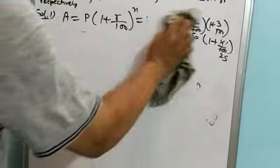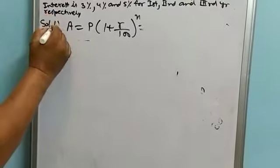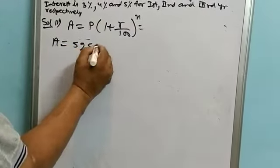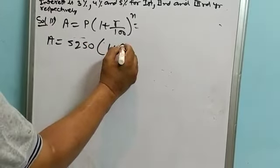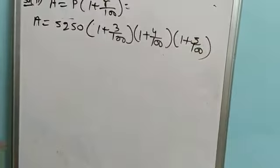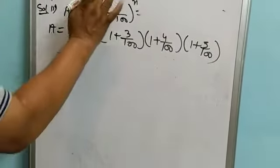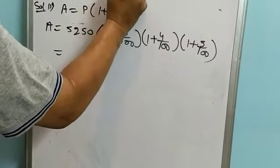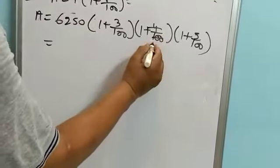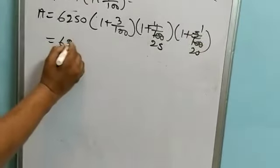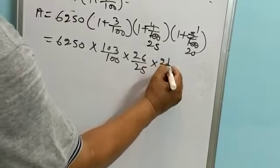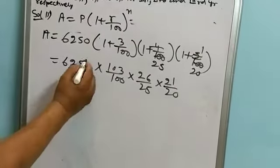Amount is equal to P times the formula, so 5250. This should be 6250, that is 25 times 250. Here is 6250 times 103 upon 100, here is 26 upon 25, and 21 upon 20. Now canceling zeros.